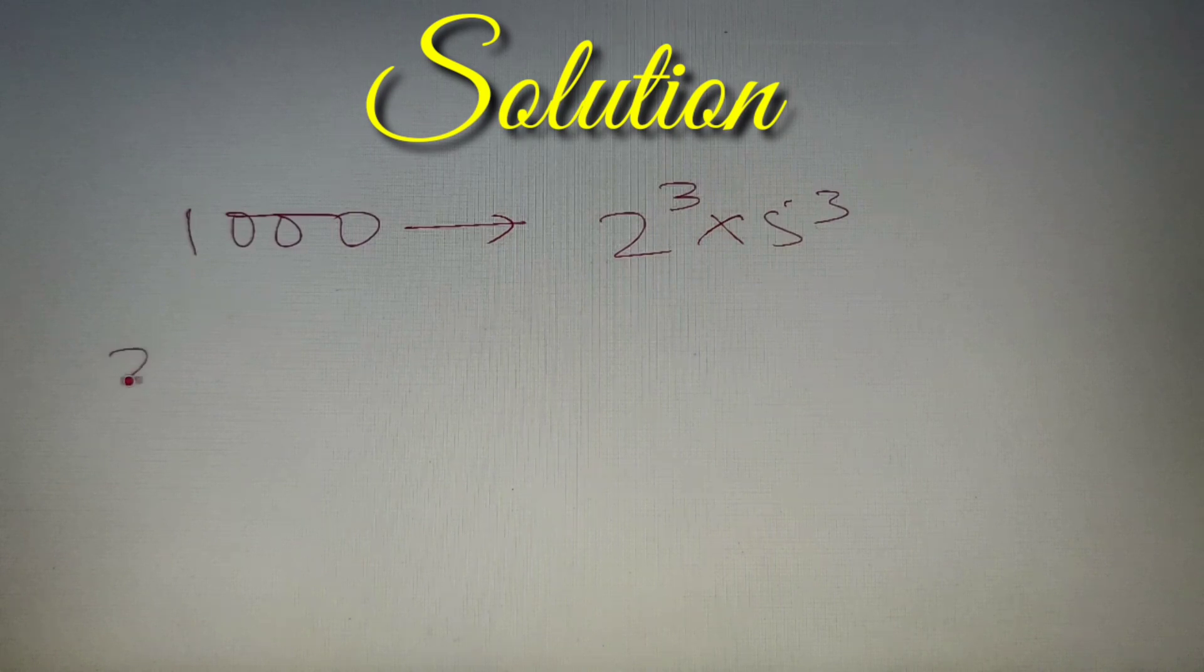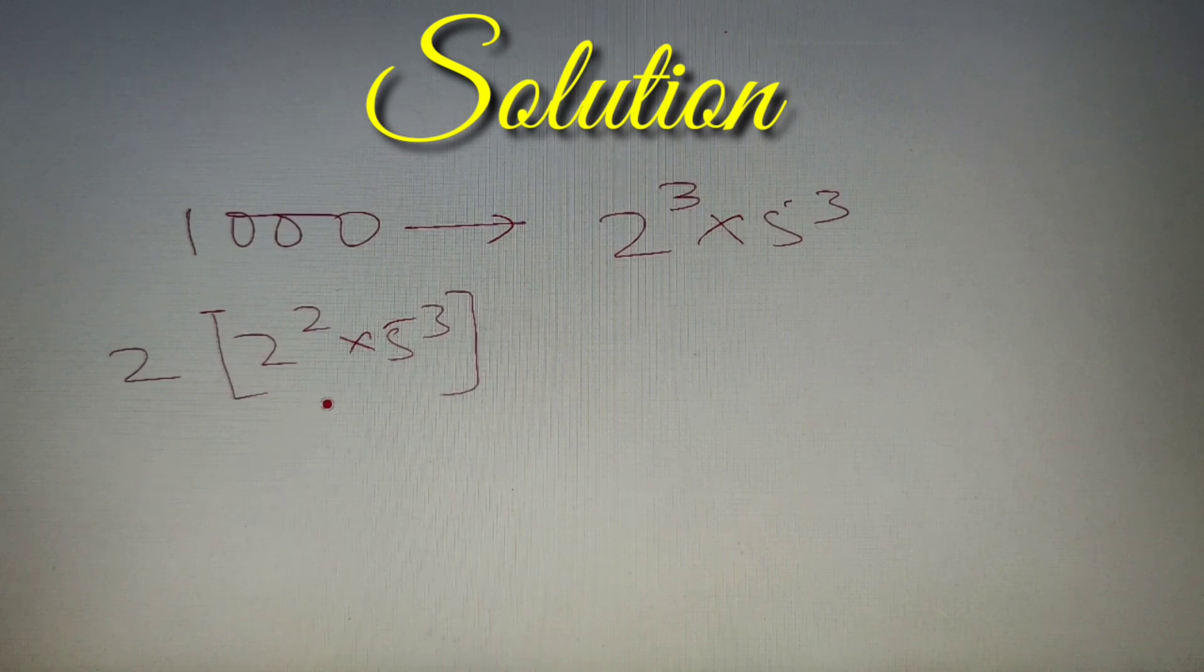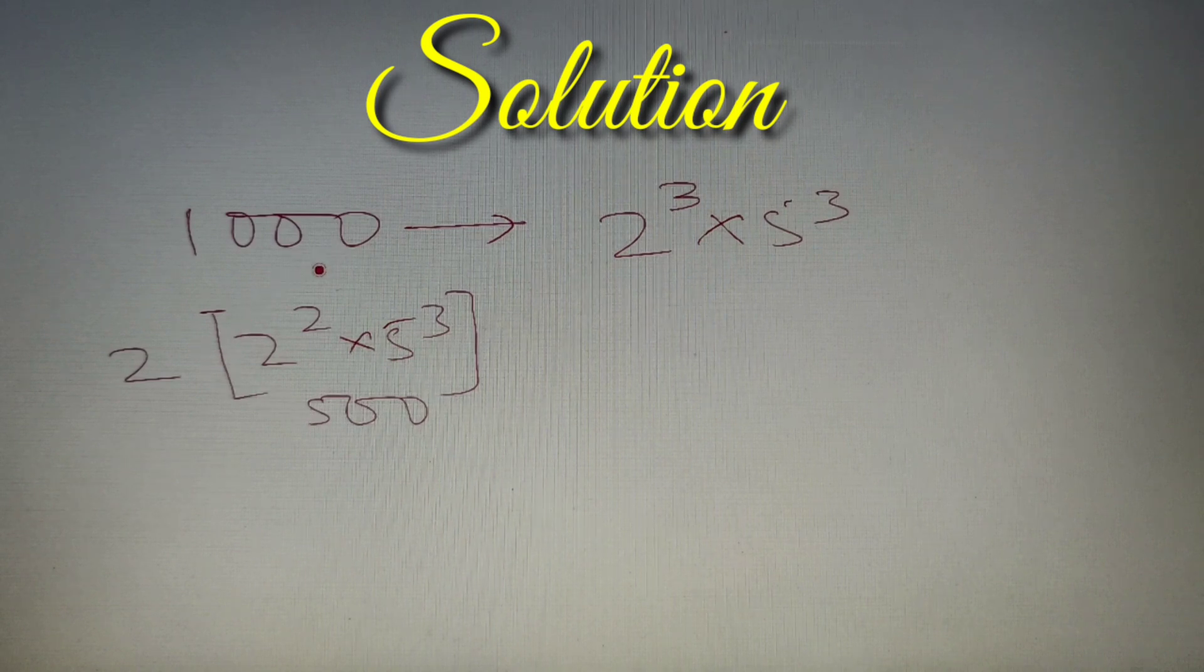Now the second step is to take out one 2 common from the prime factorized form. So we'll get 2 into 2 square into 5 cube. Now 2 square into 5 cube is basically equal to 500, and now we have to calculate the sum of all divisors of the number 500 and then multiply it by 2, and we'll eventually get the sum of even divisors of the number thousand.